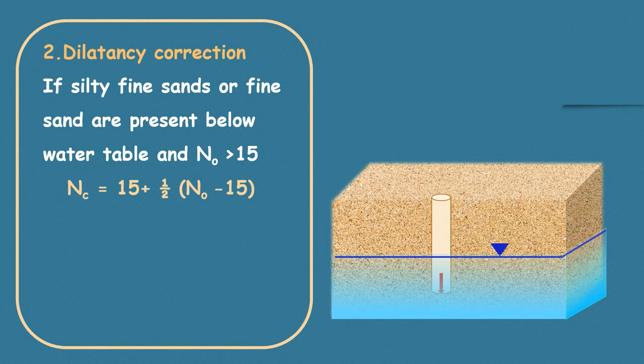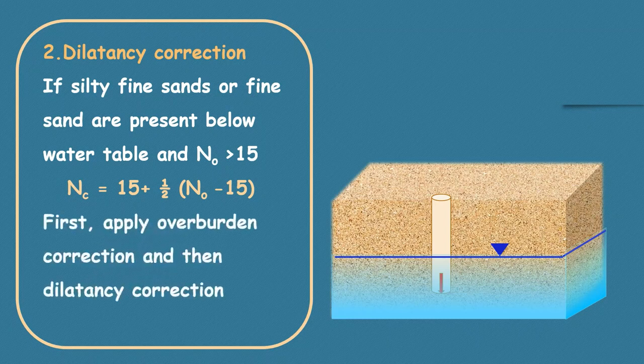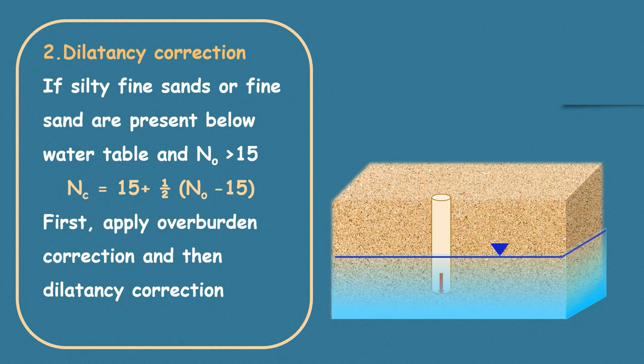Nc equals 15 plus half of (N₀ minus 15). It is to be noted here that overburden correction has to be applied first, and then the dilatancy correction is done. Fine. What could we do with this SPT N value? Let's learn their applications too.